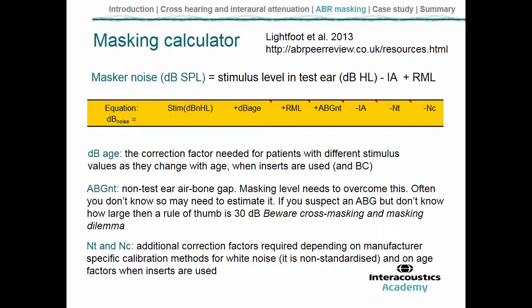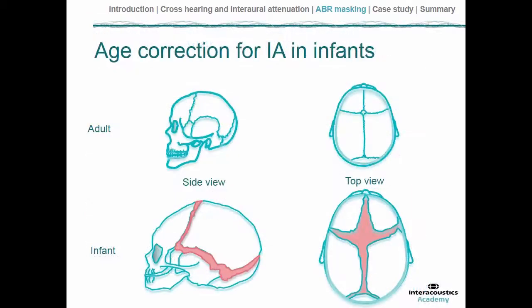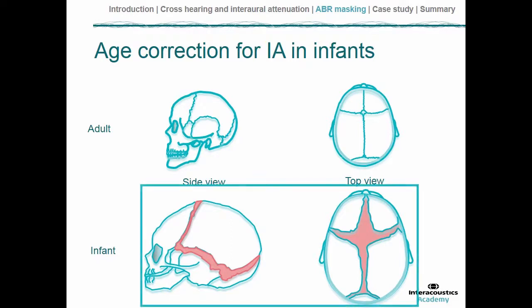Finally, there's a calibration correction for the specific type of wideband noise being used and how it's calibrated in SPL. There's no agreed universal format for how white noise should be calibrated, so different manufacturers of ABR equipment may use slightly different methods. I'll briefly talk about that for the Interacoustics Eclipse device. Regarding the age correction for interaural attenuation in infants: in adults, all plates of the cranium are fused together, so vibrations easily pass across and can be detected by both cochleae.